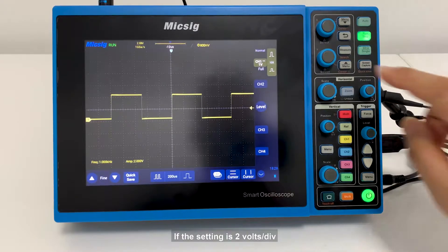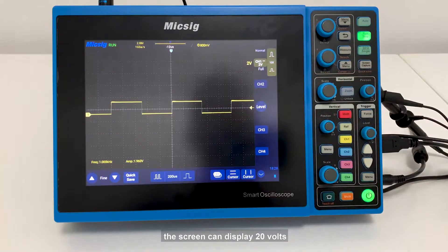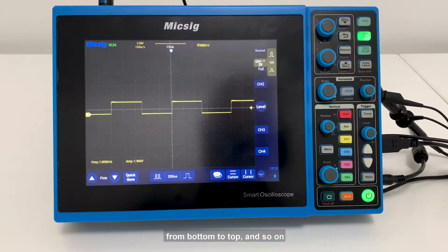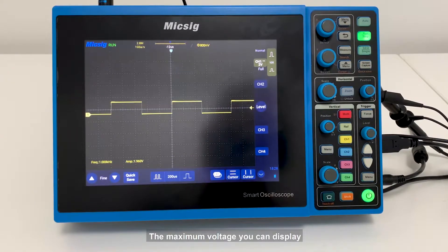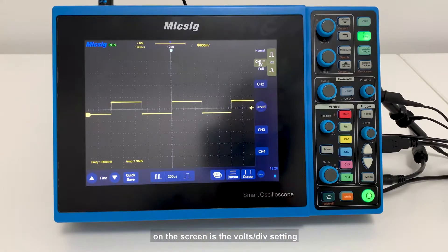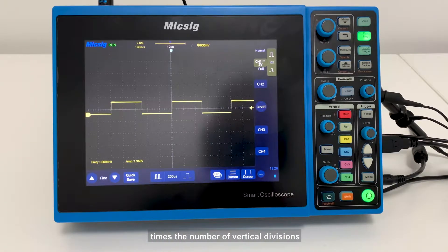If the setting is two volts per division, the screen can display 20 volts from bottom to top, and so on. The maximum voltage you can display on the screen is the volts per division setting times the number of vertical divisions.